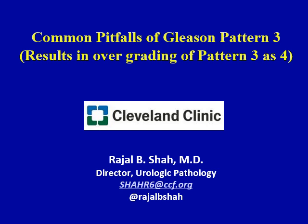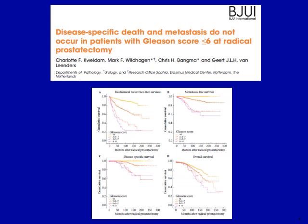In my experience in contemporary prostate biopsy practice, I think we are seeing more problems with the overgrading of prostate cancer compared to undergrading — specifically overgrading of pattern 3 as 4. The important reason is that we now know that patients with pure Gleason pattern 3 at radical prostatectomy have an indolent disease; disease-specific death and metastasis do not occur. So the distinction of pattern 3 from pattern 4, in the era of active surveillance management for prostate cancer, has become especially critical.